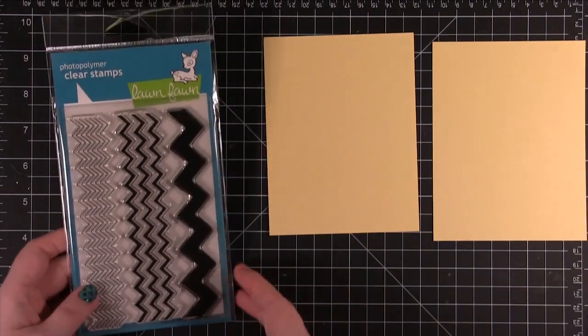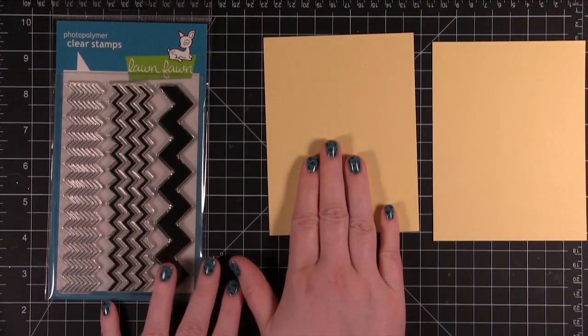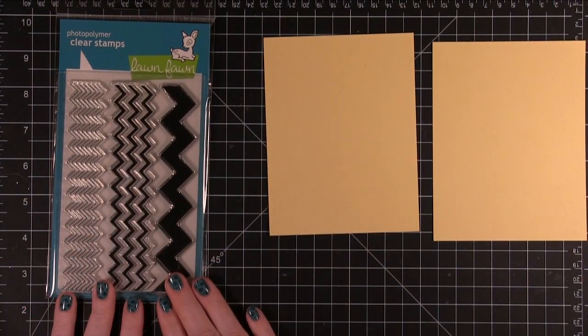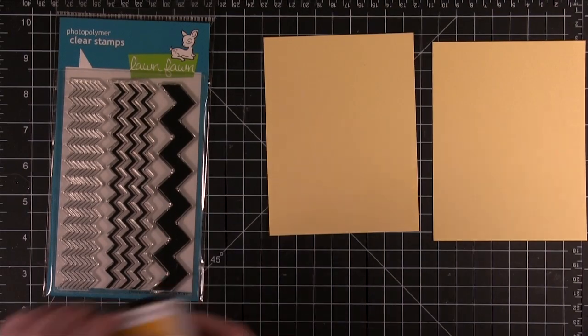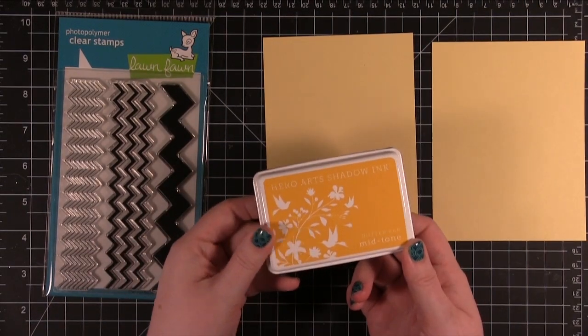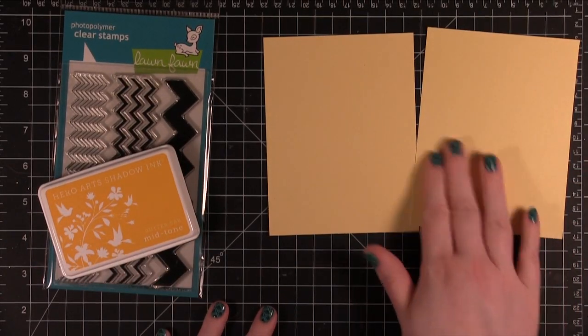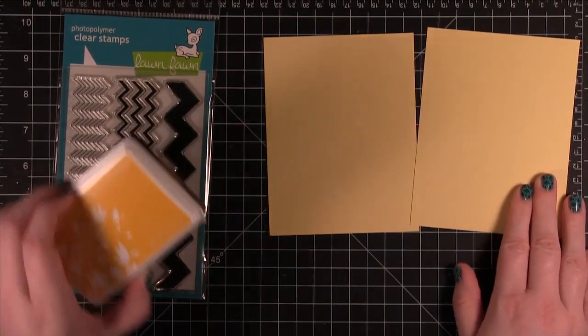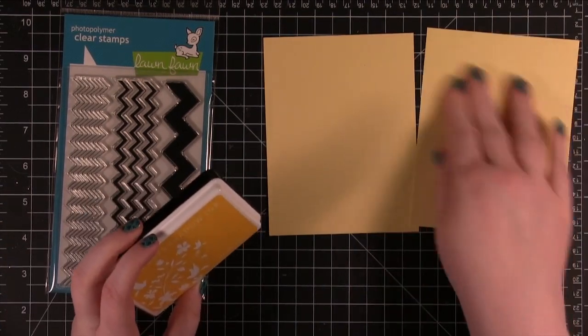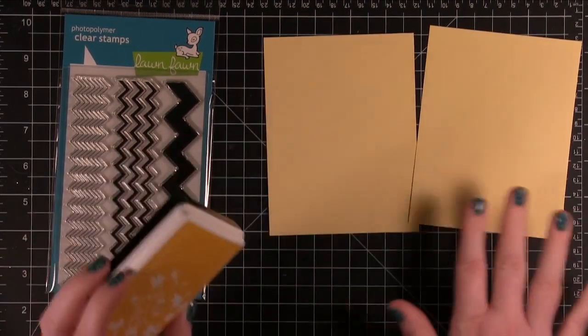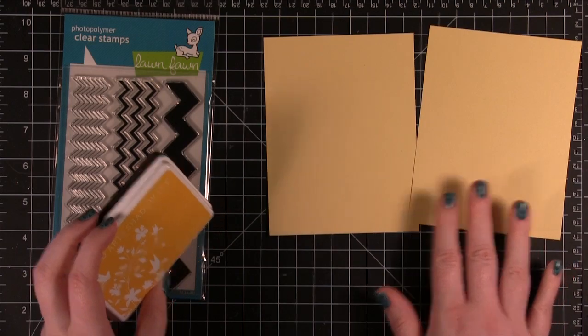I'm going to be doing some stamping. On this one I'm going to be stamping the Chevron Patterns in Butter Bar Midtone Ink from Hero Arts. On this one I'm going to be stamping in Versamark and doing clear embossing. Then I'm going to take the ink and add the ink over it so we're going to get an opposite color effect on each one.